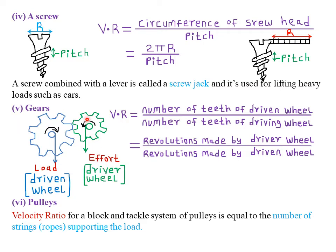If you apply effort on the driver wheel, as the driver wheel rotates in the anti-clockwise direction, that will cause the rear wheel to rotate in the clockwise direction. The driver wheel is where the effort is applied, and the driven wheel represents our load. The velocity ratio for gears is given by the number of teeth of the driven wheel divided by the number of teeth in the driving wheel. For example, if we have 20 teeth in the driven wheel and 10 teeth in the driver wheel, the velocity ratio is 20 divided by 10, which gives us 2. The same velocity ratio can also be given by the revolutions made by the driver wheel divided by the revolutions made by the driven wheel.